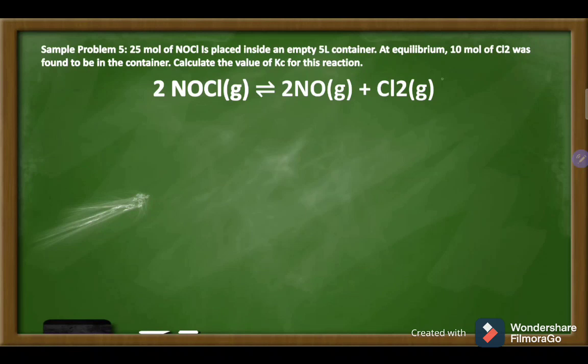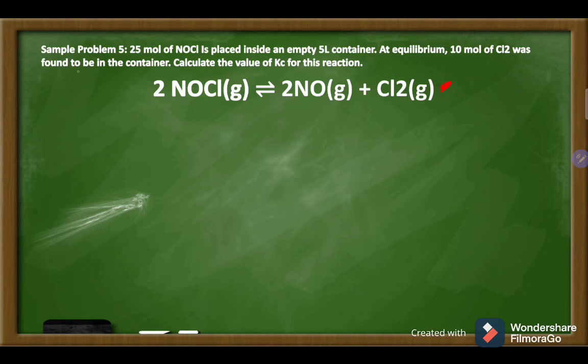Sample problem number five: 25 moles of NOCl is placed inside an empty 5-liter container. At equilibrium, 10 moles of Cl2 was found to be in the container. Calculate the value of KC for this reaction. We cannot immediately solve for KC, so we are going to use the ICE method.